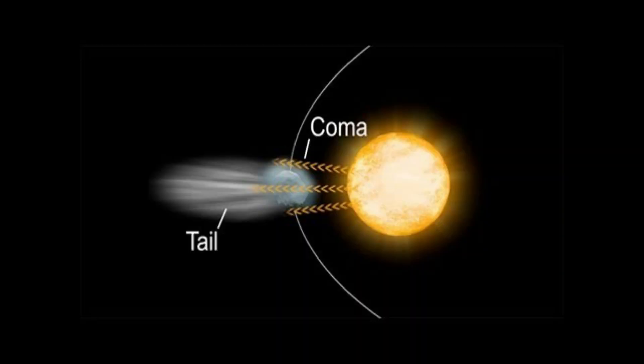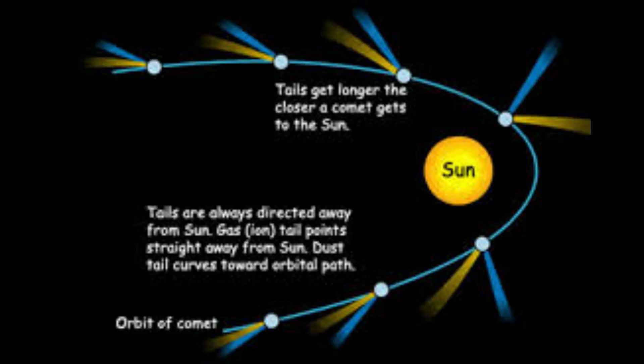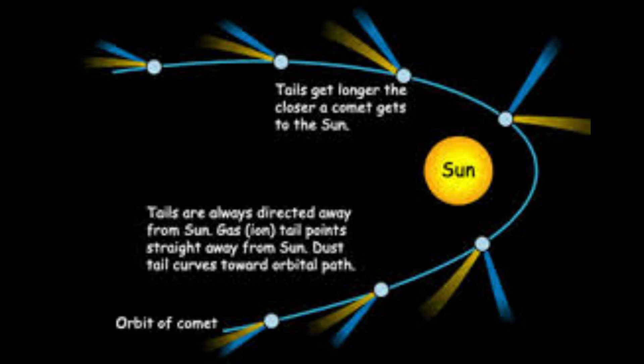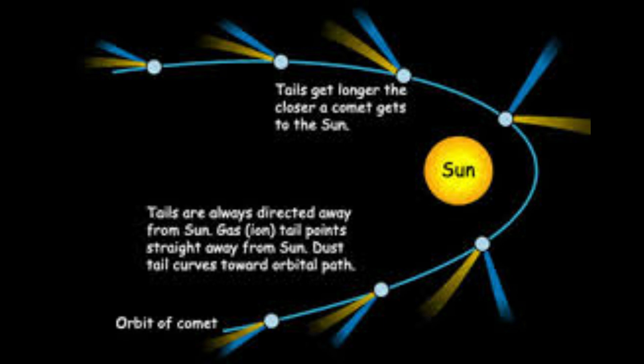Comets have a tail structure. In the comet, there are full iceberg particles that get vaporized. The tails are two types: one is straight and one is curved. The straight tail is gaseous and the curved tail is made of ice particles.